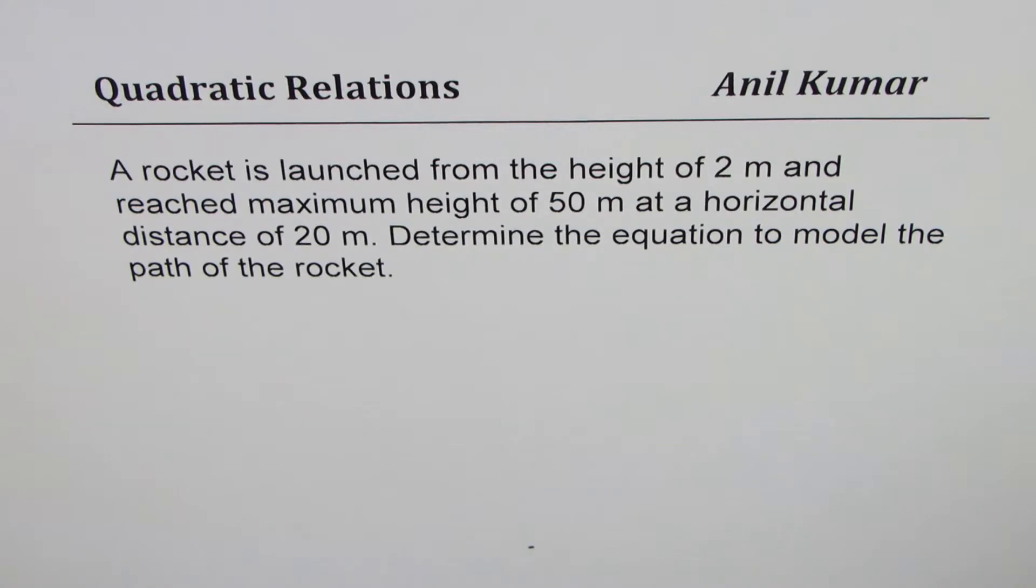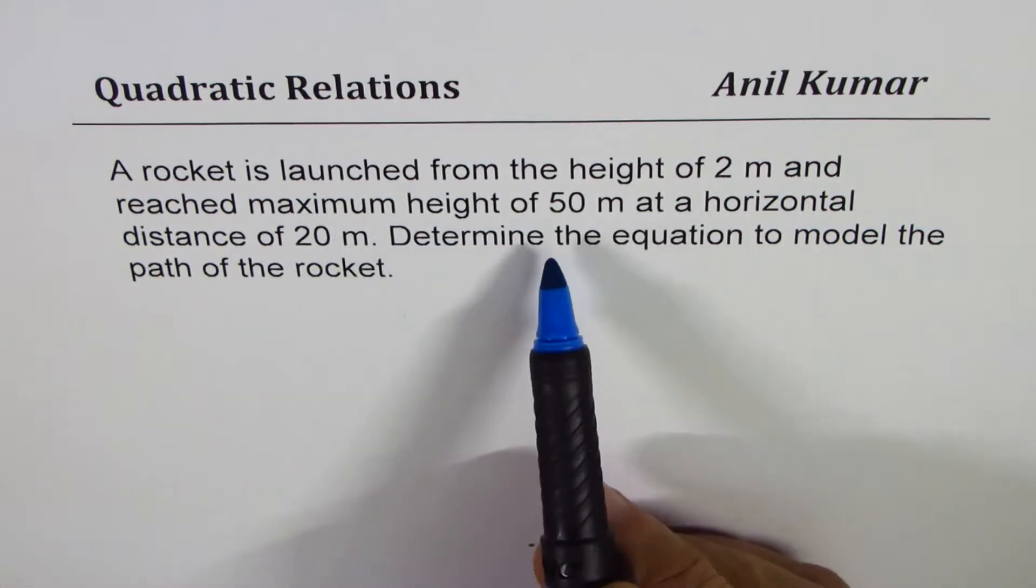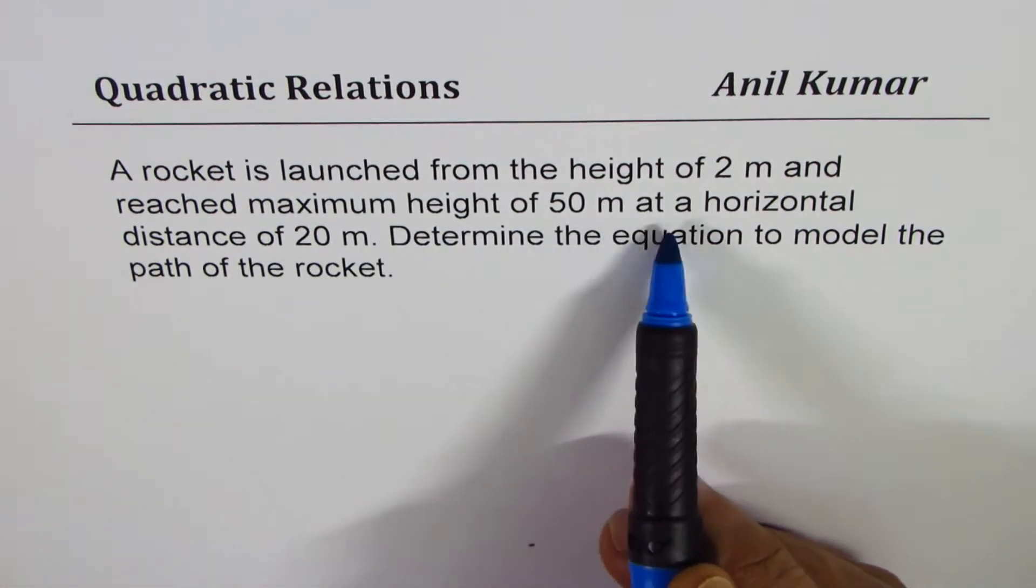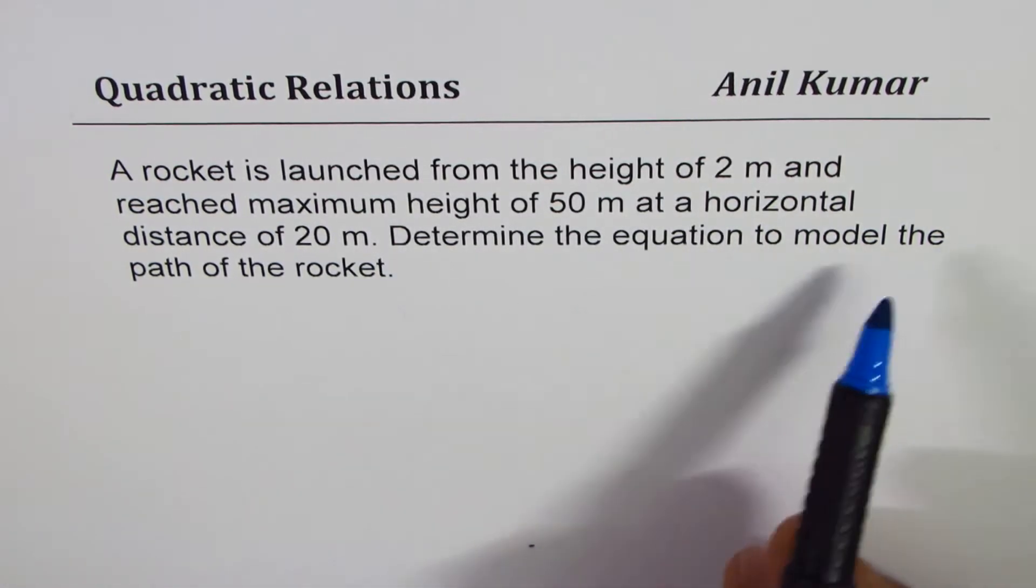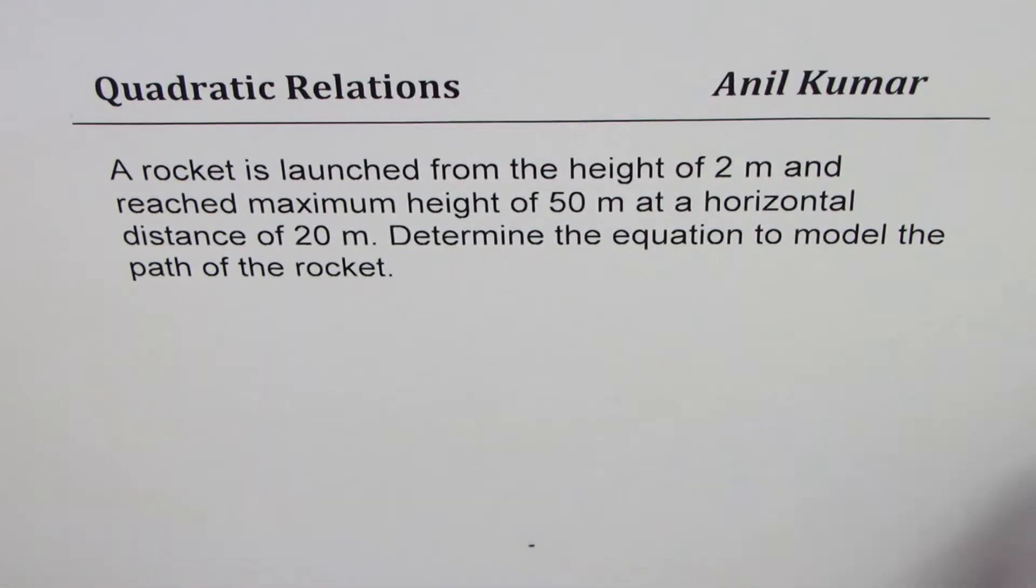The question here is: a rocket is launched from the height of 2 meters and reached maximum height of 50 meters at a horizontal distance of 20 meters. Determine the equation to model the path of the rocket.